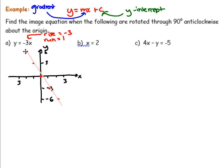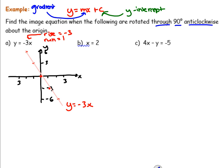Maybe what we should do is label that line as well. We'll label that line with its equation: y equals negative 3x. Now what we need to do — we're asked to rotate it. Look at the question: through 90 degrees anticlockwise about the origin. So our origin is our center of rotation.